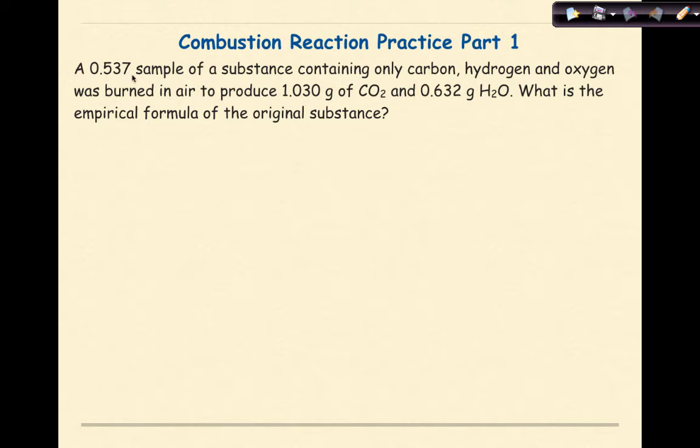A 0.537 sample of a substance containing only carbon, hydrogen, and oxygen was burned in air to produce 1.030 grams of carbon dioxide and 0.632 grams of water. What is the empirical formula for the original substance?